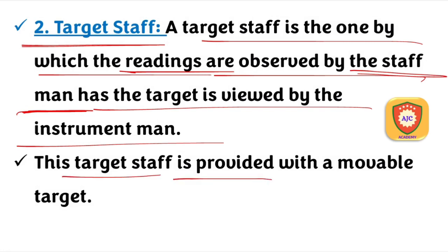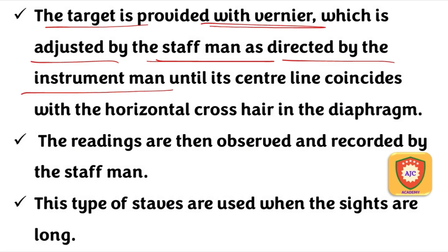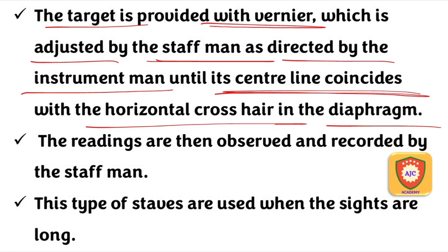When using the target staff, a mobile target is used. Verniers are fixed on it. The instrument man observes through the telescope and aligns the horizontal crosshair with the center line. The staffman then adjusts the target and reads the verniers.